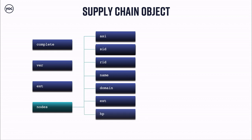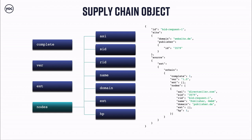The optional 'rid' attribute should be a copy of the bid request ID. Name and domain are optional and should not be included if already in sellers.json. The 'hp' attribute — the most mysterious one — indicates whether this node is involved in the flow of payment for inventory. When set to 1, the advertising system in the 'asi' field pays the seller in the 'sid' field, who is responsible for paying the previous node in the chain if it exists. When set to 0, this node is not involved in payment flow. For version 1.0, hp should always be set to 1.